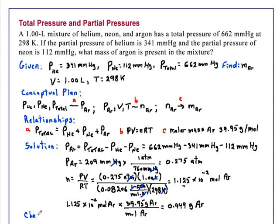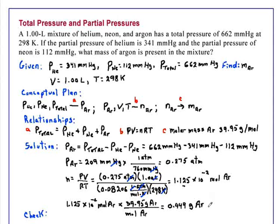To check ourselves, we first verify that the units are correct — we were looking for an answer in grams. The magnitude is also about correct: the volume is 1.0 liter, and 1.0 liter under STP conditions is about 1/22 of a mole. The partial pressure of argon in the mixture is about 1/3 of the total pressure, so we have approximately 1/66 of the molar mass of argon, which is fairly close to our calculated number of grams of argon.